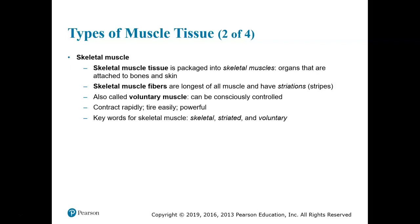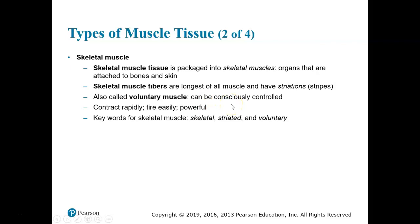Skeletal muscle tissue is packaged into skeletal muscles, and skeletal muscles are considered organs — the ones we name when we exercise, like your biceps and triceps. They are composed of cells called skeletal muscle fibers, which are the longest cells of all, and they have striations or stripes on them. Skeletal muscle is voluntary because we can consciously control contraction. They contract rapidly, tire easily, and are powerful. Key words are skeletal, striated, and voluntary.